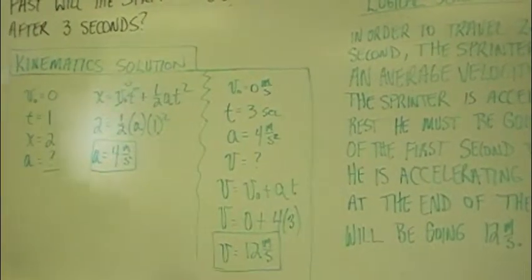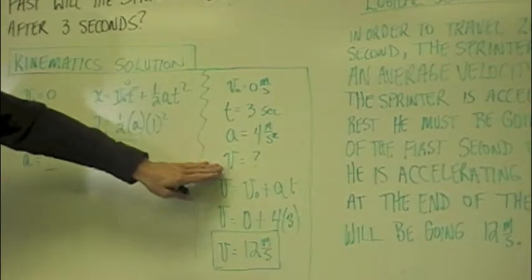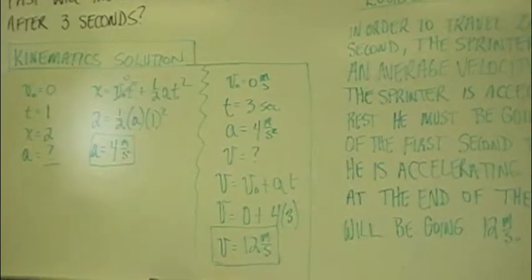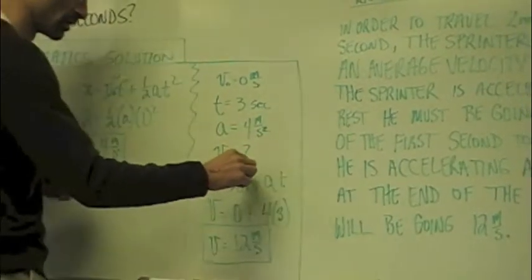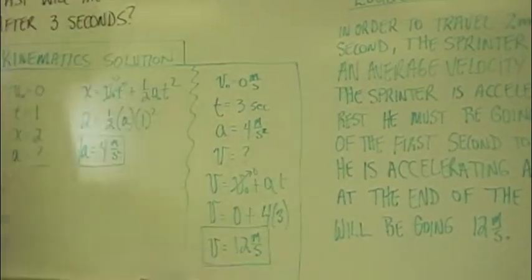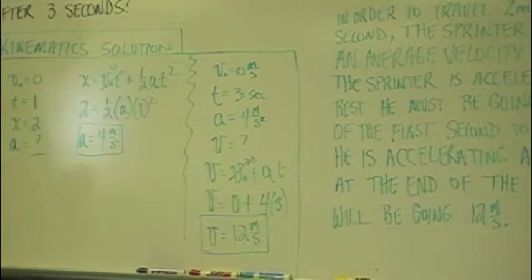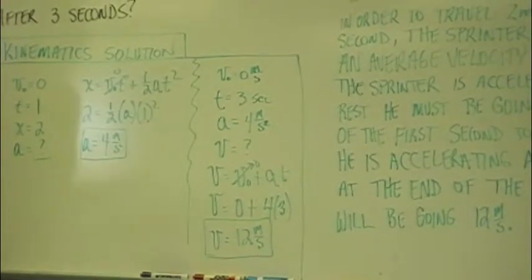We can determine velocity using this kinematic equation. It's pretty simple because this term goes to zero. We get four times three, so the sprinter is going 12 meters per second.